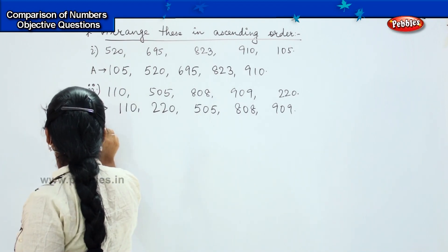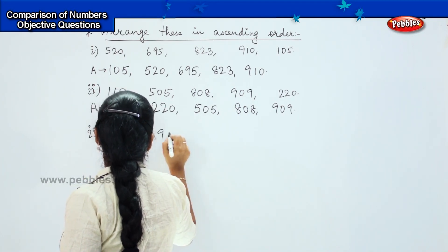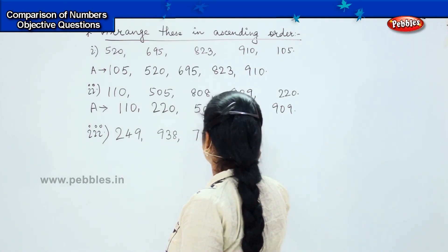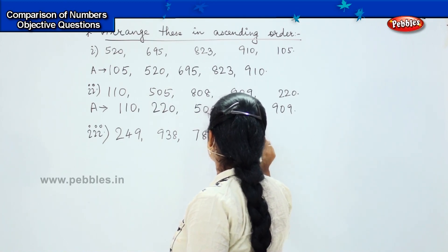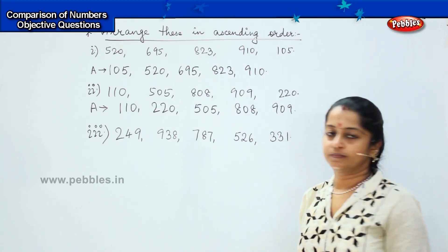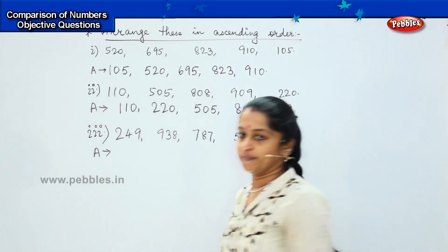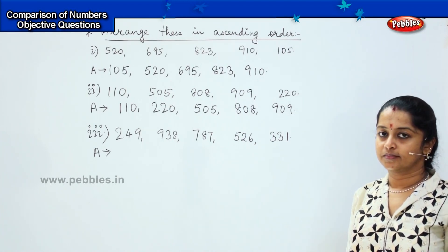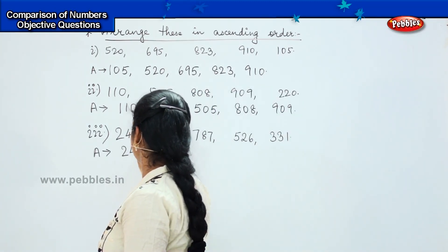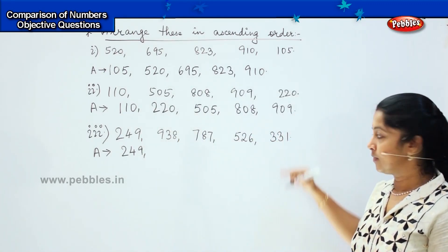Here is your next question: 249, 938, 787, 526, and 331. Now you need to tell me which is the first number — the smallest. Just check and let me know. Very good, it is 249. So we will start with 249. What is the next number after 249? It is 331.